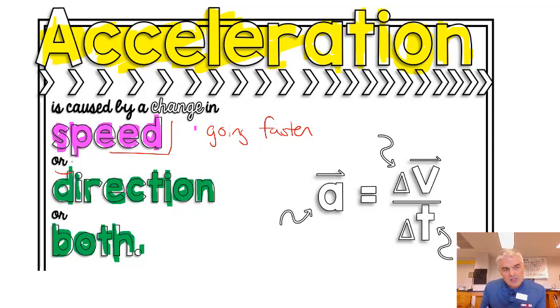But it also can be caused by a change in direction. So let's say you're going around a curve of a bank. You feel that, don't you? You feel that in your body. Your body wants to go this way. But since you're changing direction at a constant velocity, that's called acceleration. And by the way, I should say going faster. It could also be going slower. We sometimes call that deceleration, but that is still acceleration in the negative direction.